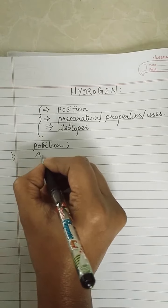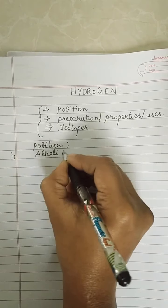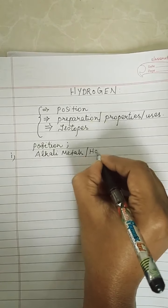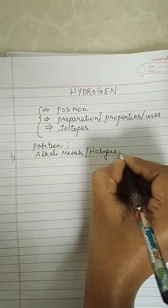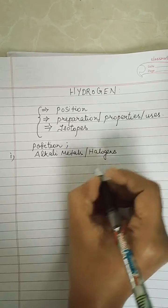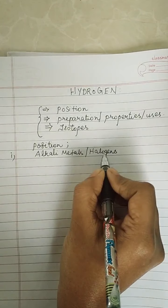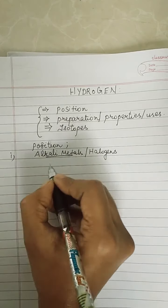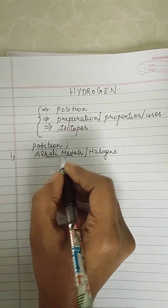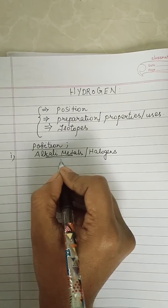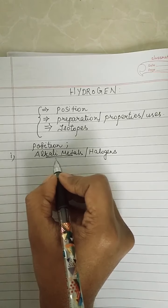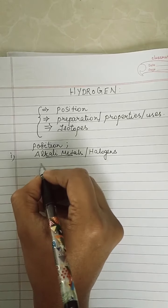Because hydrogen is resembling alkali metals as well as halogens. The position of hydrogen in the periodic table is not justified because hydrogen resembles both alkali metals and halogens. Now how does it resemble alkali metals? What are the points which tell us that hydrogen resembles alkali metals?